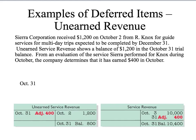The last of the deferred items is unearned revenue. Many students get this confused because they see the word revenue and think they've earned it. It is a credit balance account, as revenue is, but this is a liability account — because I have accepted the customer's money, I have a liability to provide this service. We received $1,200 on October 2nd for trips to be completed December 31st. When we received the money, we debited cash and credited unearned service revenue. The trial balance at the end of October 31st shows we still have unearned revenue of $1,200, so we must make that adjustment. We have earned $400 of it, so we no longer have a liability of $1,200 — we have a liability of $800.